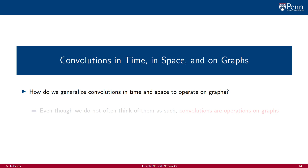Our intellectual path towards scalable machine learning on graphs begins from the construction of generalizations of the convolution operator to signals supported on graphs. We will build this generalization by observing that even though we do not often think of them as such, convolutions are operations on graphs.